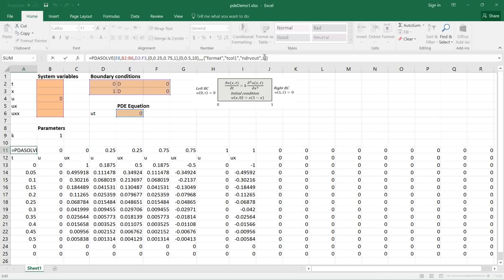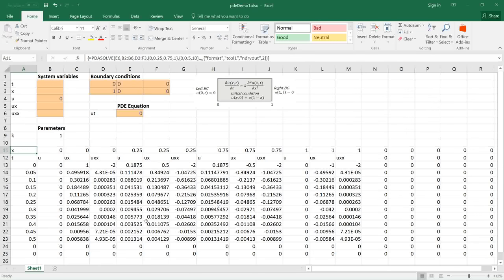To show UX and UXX I can change the value to two and run again and now I have both UX and UXX reported at these locations and these time points in the solution.